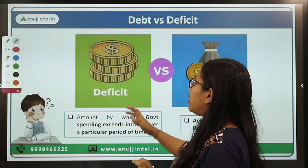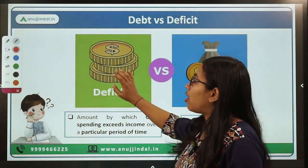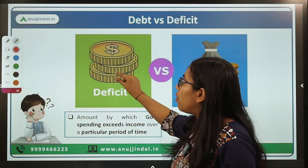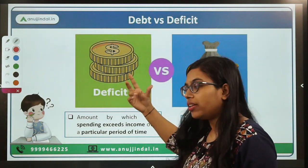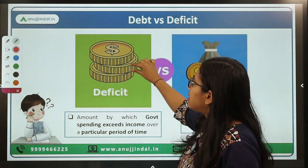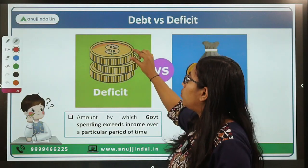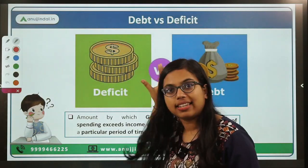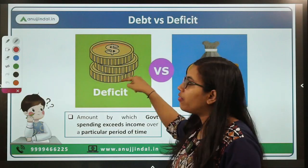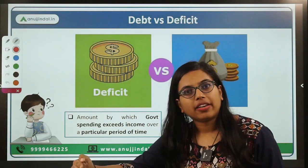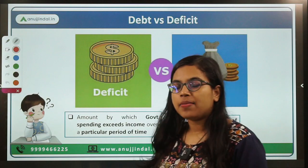Here you can see that, for example, for the financial year 2020 this was the amount of deficit; for the financial year 2021 this is the deficit; and for the financial year 2022 this is the deficit. If we accumulate all of these deficits over the period of time, that will result in debt.